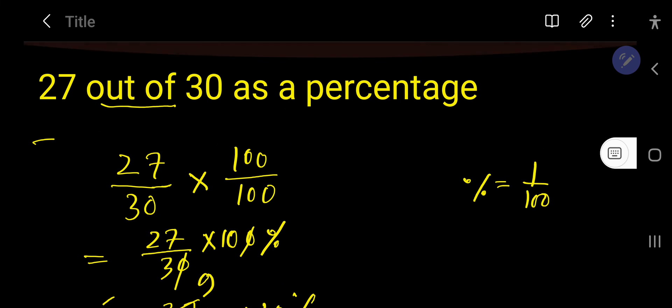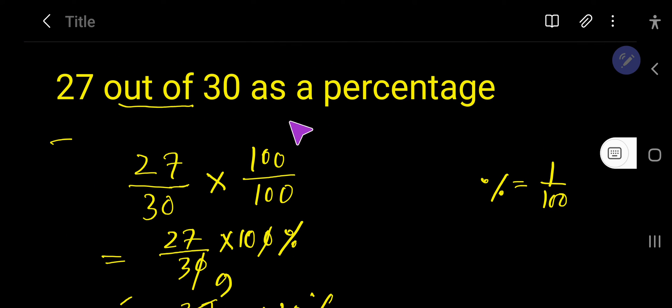So 27 out of 30 as a percentage is 90 percent. Thank you.